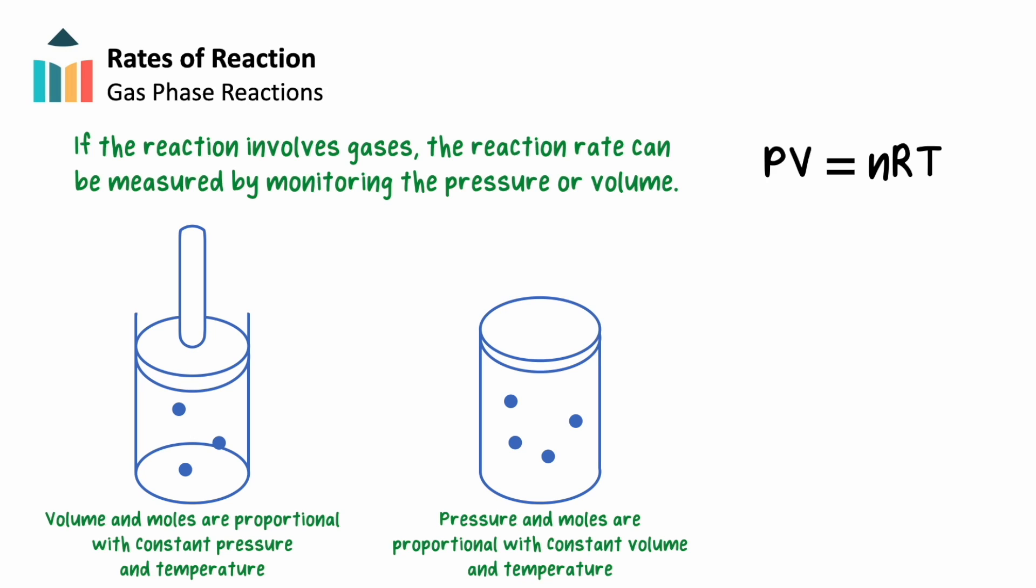If the reaction involves gases, the reaction rate can be measured by monitoring the pressure or volume of the gas. The key equation here is the ideal gas law, PV equals NRT, where pressure times volume equals moles times the gas constant R times temperature.